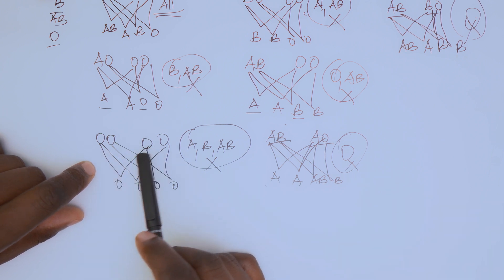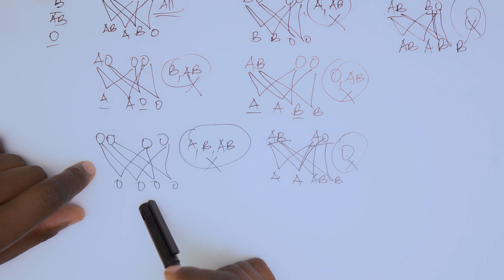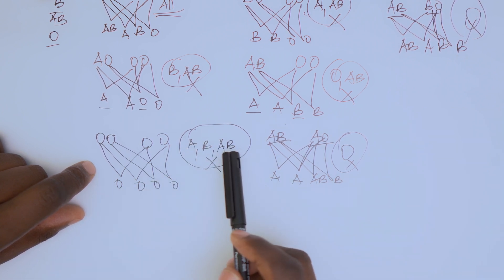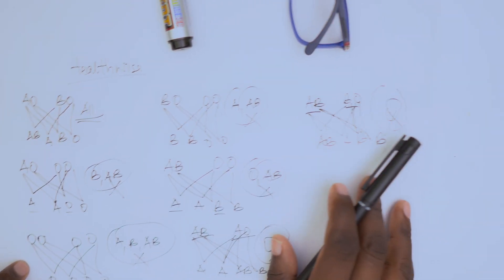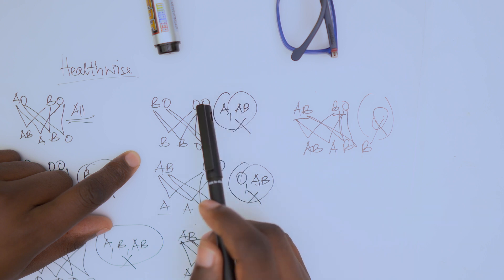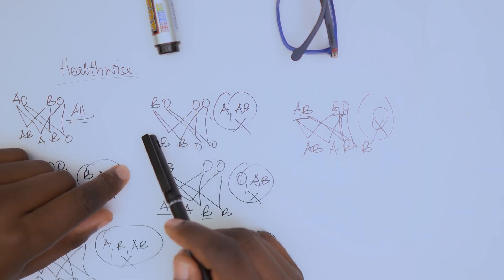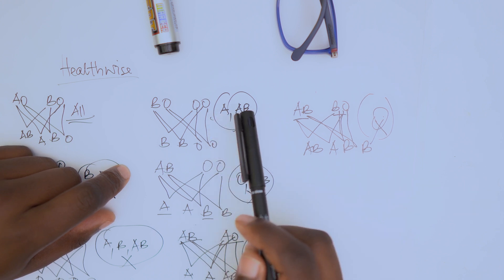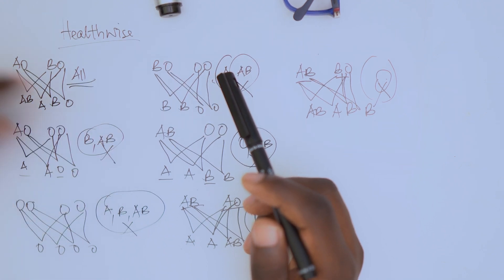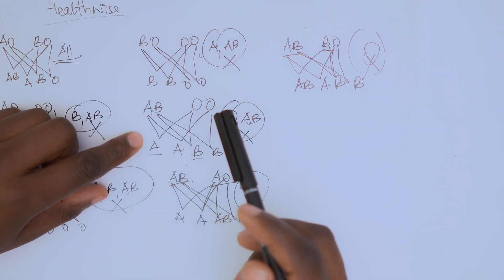If both partners are O, the only blood group you'll find in that family is O. If something else like A, B, or AB shows up, maybe it's a miracle. Similarly, if one partner is B and the other is O, you can only find B and O — you will not find A or AB. If they show up, you know — faith works in mysterious ways.